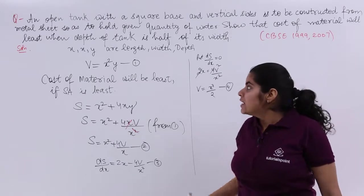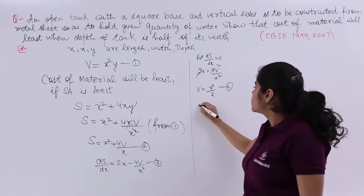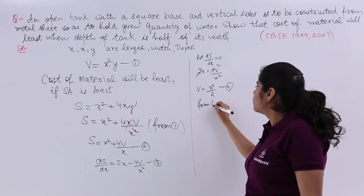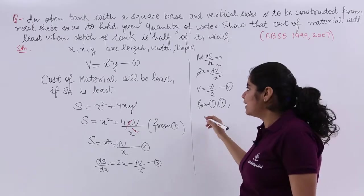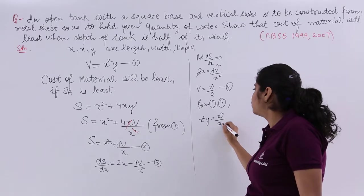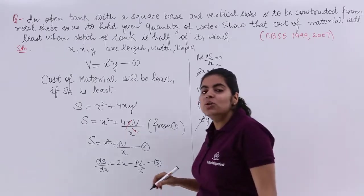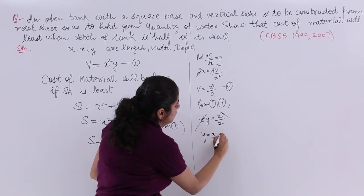Now you already know certain things. You know that x²y = V. So from equations 1 and 4, I can write the value of V and compare. So x²y = x³/2. Things cancelling, so x = 2y, or y = x/2.